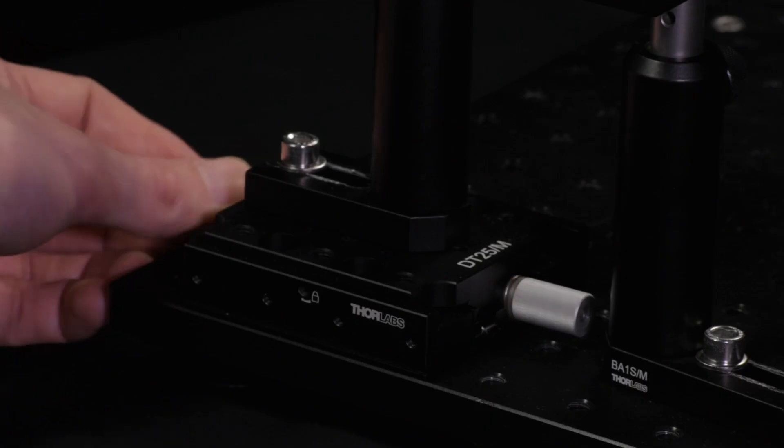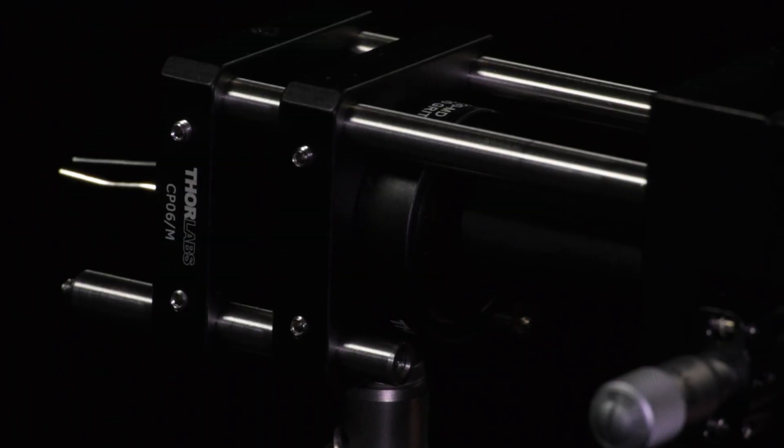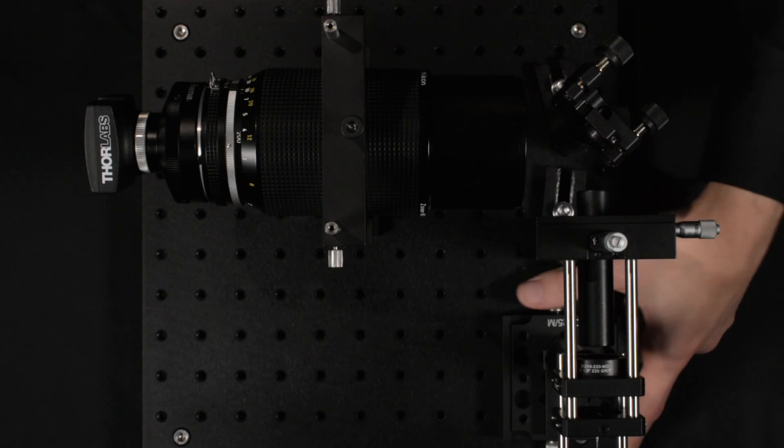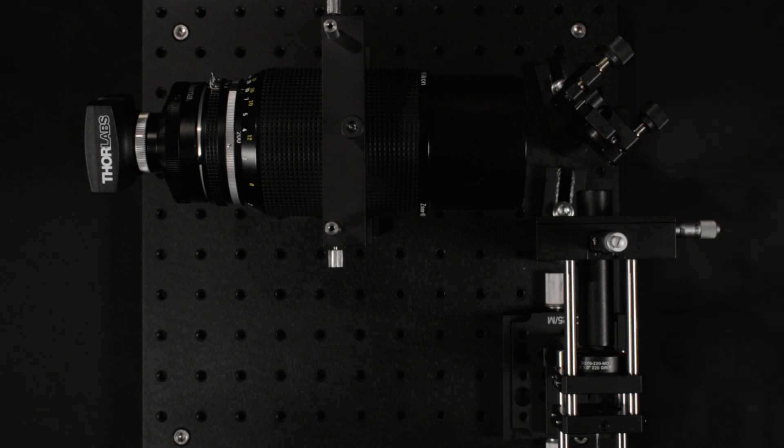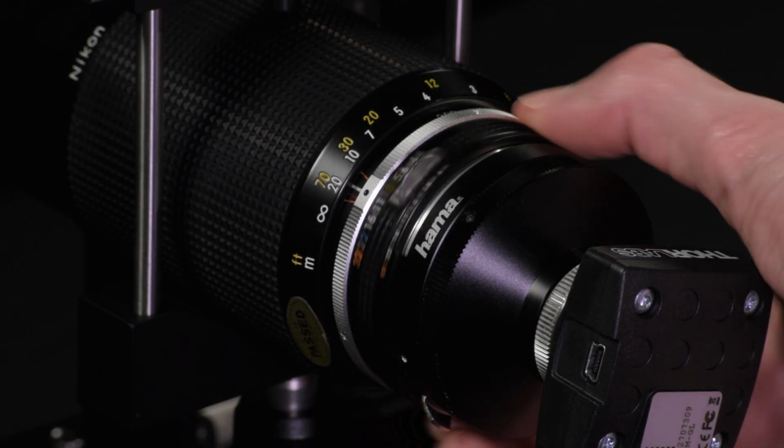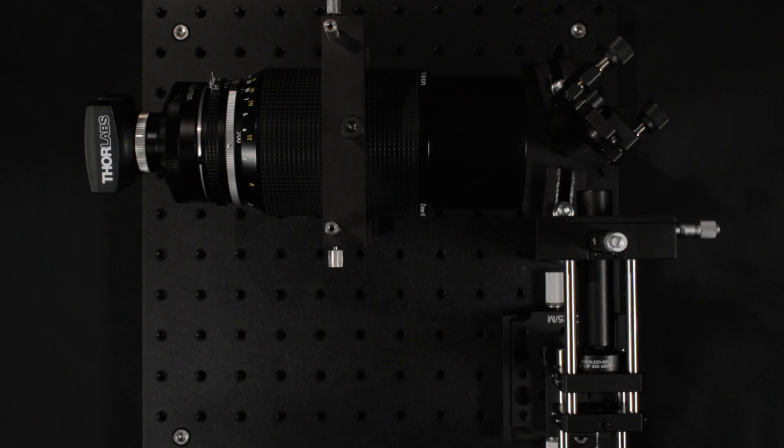The sample under analysis is placed on the translation stage to get it in focus. Precise focus is essential if you want to achieve good performance in microscopy setups. Finally, I have used a 200 mm telephoto objective from Nikon as a tube lens.